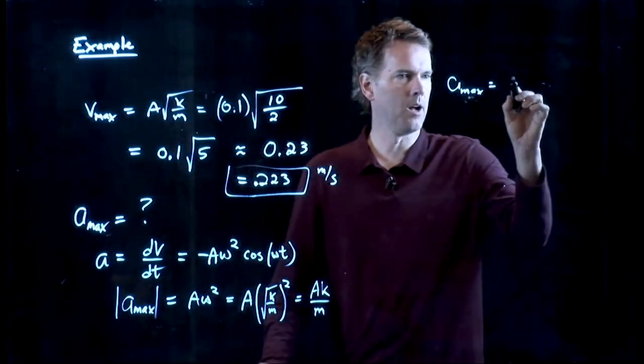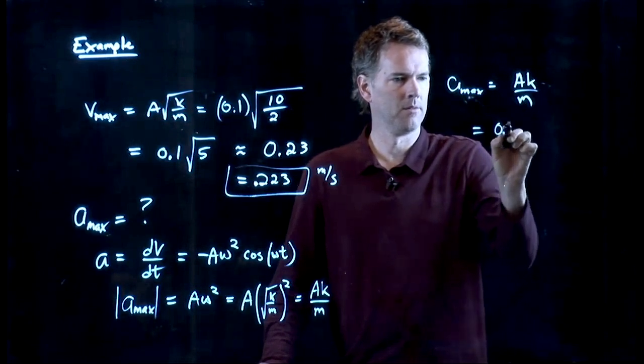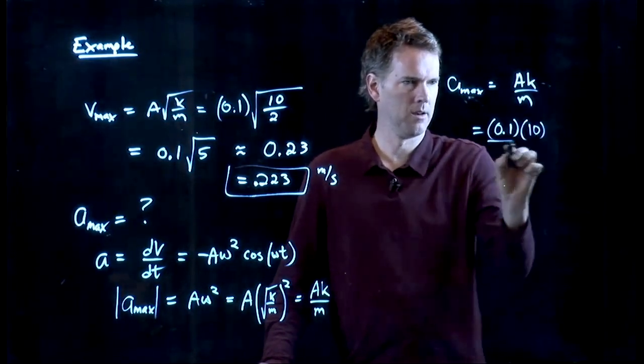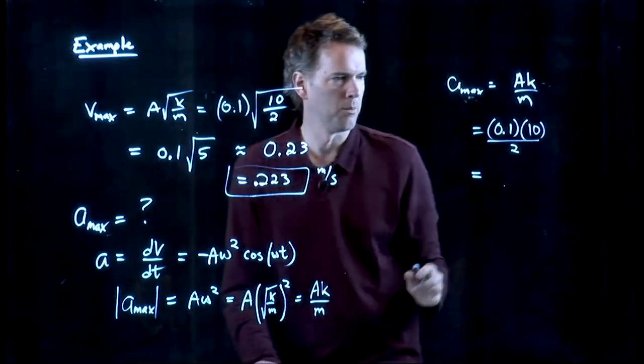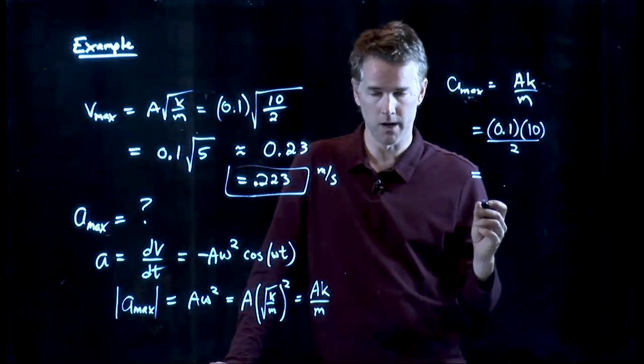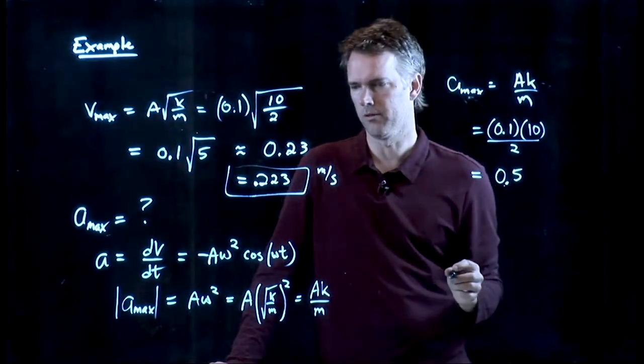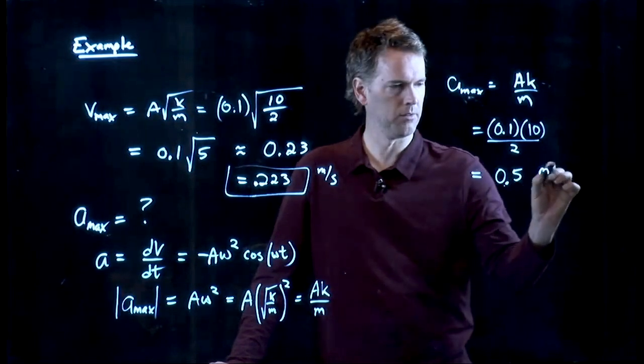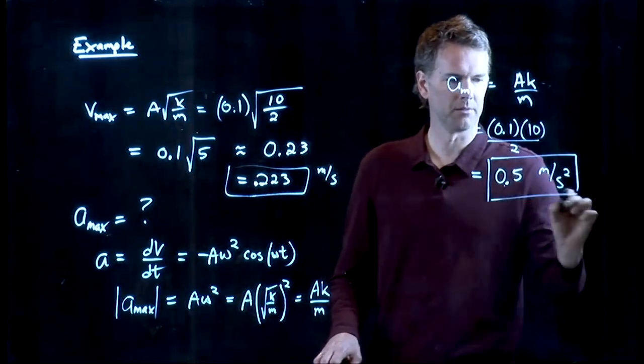A, we said, was 0.1. K, we said, was 10. M was 2. 0.1 times 10 is 1. We get 1 over 2, which is a half. And the units in SI units are meters per second squared.